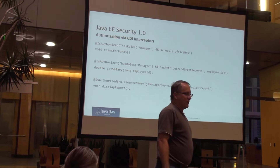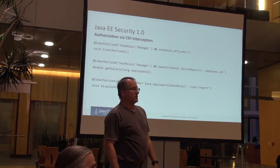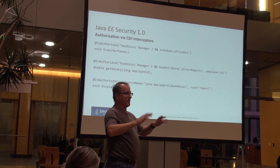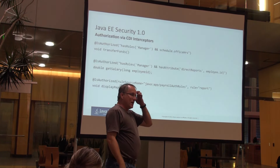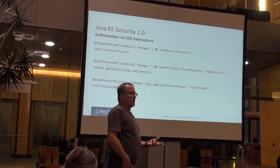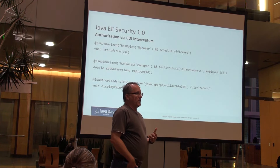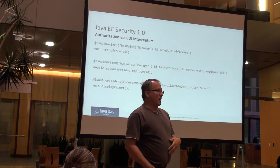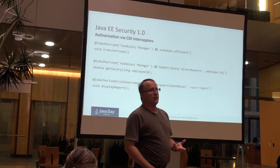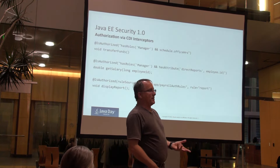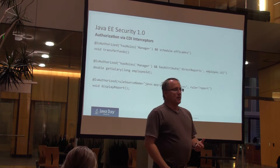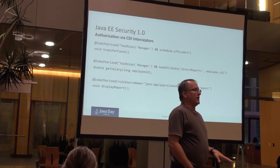One of the things we've been doing over various releases of Java EE is decomposing the EJB model — it used to have just a ton of functionality in it. Now, for example, in Java EE 7, we've added transaction support that under the hood uses CDI interceptors.